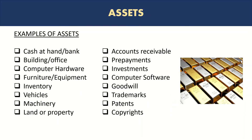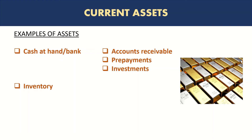Going back to our list of assets, the current assets would be: cash at hand or at bank, inventory (as discussed, normal operating cycle), accounts receivable (normal operating cycle), and prepayments. Prepayments could be long-term as well — it depends on when that asset is expected to be realized — but usually prepayments are mostly short-term. Investments could also be either short-term or long-term depending on their maturity.